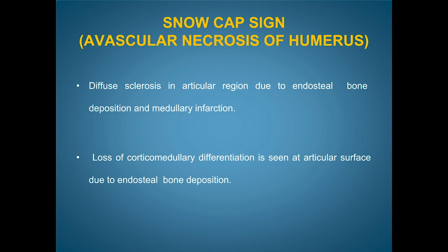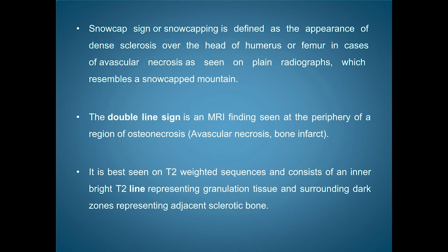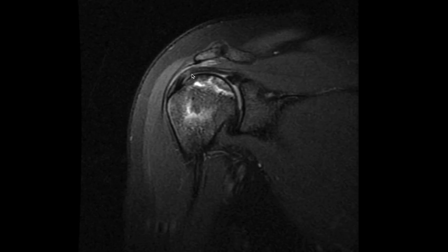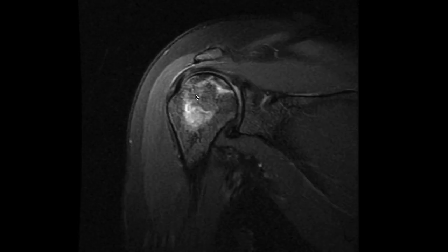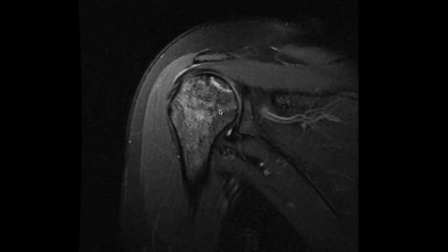On MRI, there is a comparable sign called the double line sign, which is seen in cases of bone infarctions and also in avascular necrosis of the humeral head or head of the femur. In this case, you can also see mild supraspinatus tendinopathy.